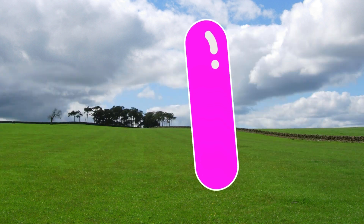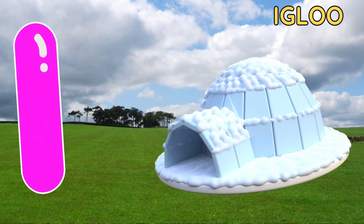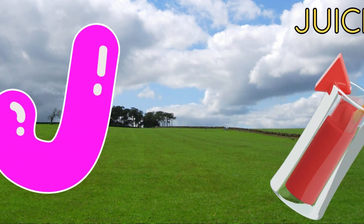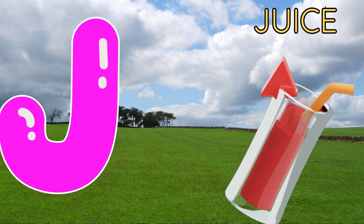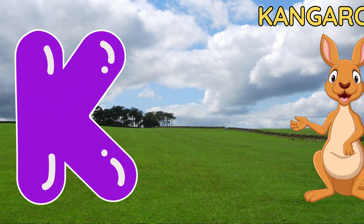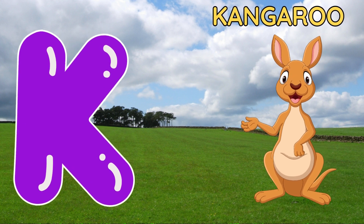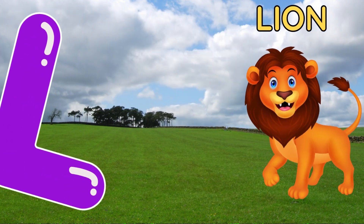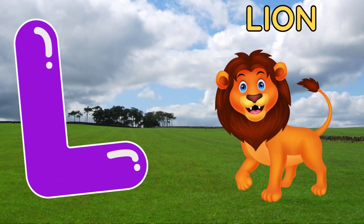I is for igloo, i-i-igloo. J is for juice, ju-ju-juice. K is for kangaroo, k-k-kangaroo. L is for lion, lion.